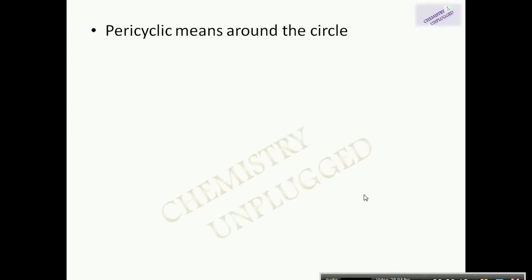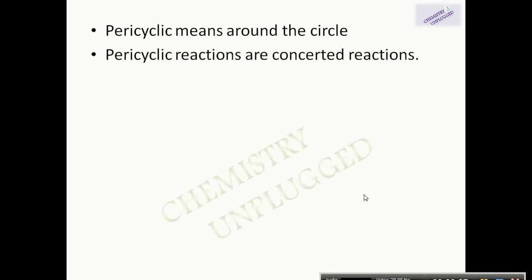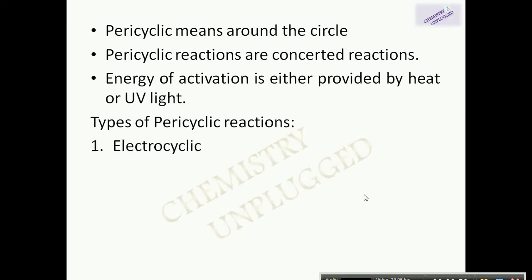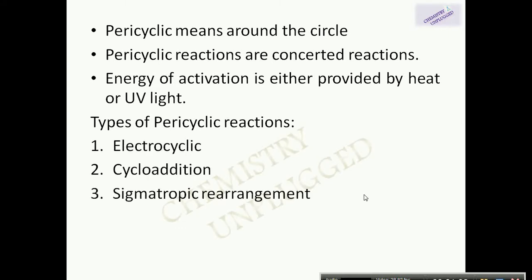Pericyclic means around the circle, meaning cyclic shifting of electrons. In pericyclic reactions there is cyclic shifting of electrons. Pericyclic reactions are concerted in nature — concerted means reactants are converted into products in a single step without converting into intermediates. The energy of activation for these reactions is either provided by heat or UV light. Pericyclic reactions are of four types: electrocyclic, cycloaddition, sigmatropic shift, and group transfer reactions.